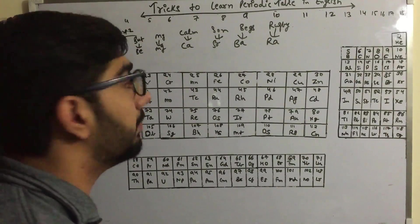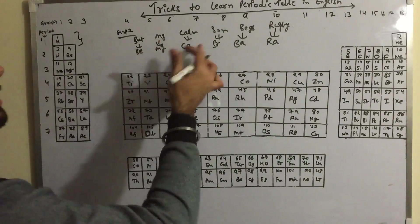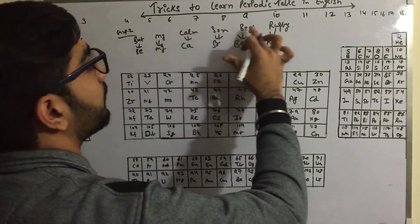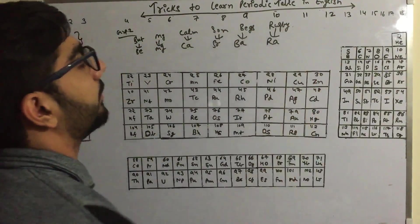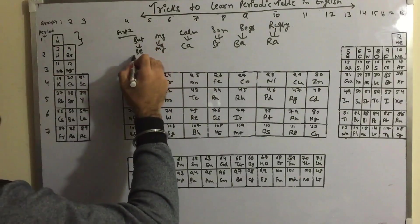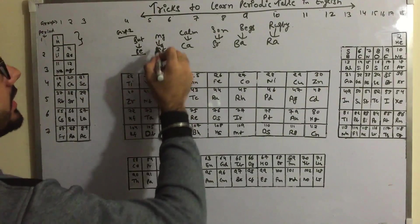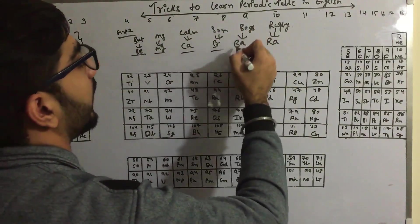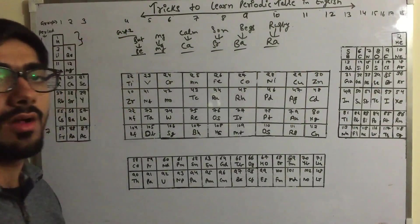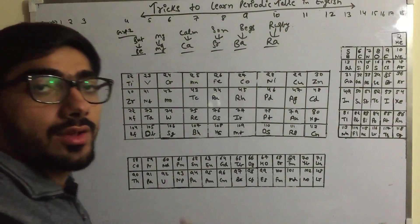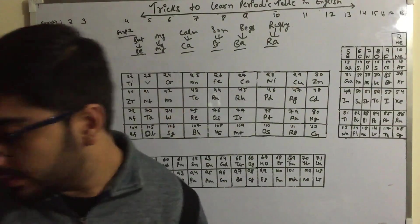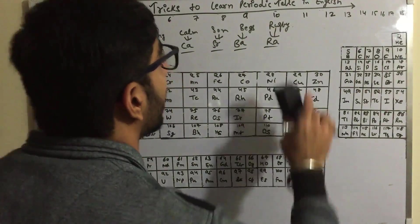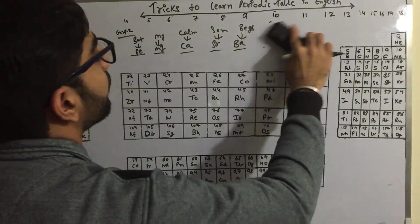To recap Group 2: 'But my calm son begs rugby' — B for Beryllium, M for Magnesium, and so on. This is how we learn the s-block elements of Group 1 and Group 2.